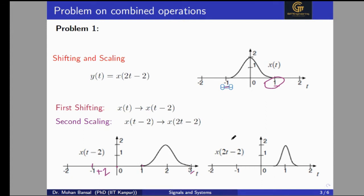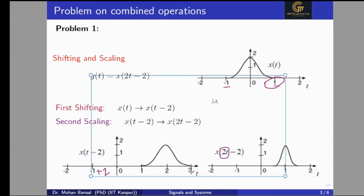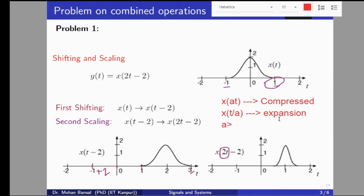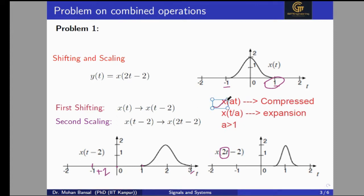Now we will apply the scaling — scaled by two. If the signal is x(at), this is the compressed signal. If the signal is x(t/a), this is the expanded signal. In both conditions a should be greater than one. In our case x(at) is satisfied where a is equal to two, so this will be compressed by a factor of two.